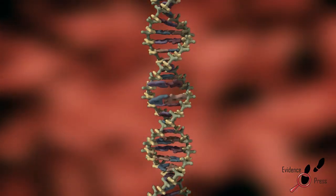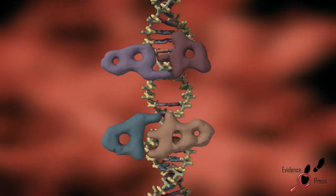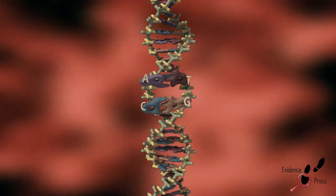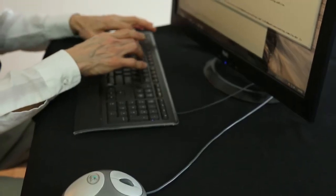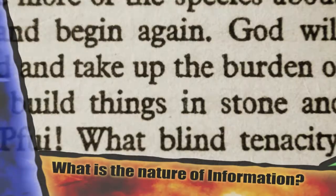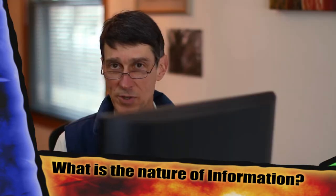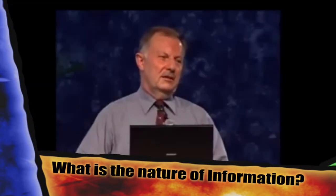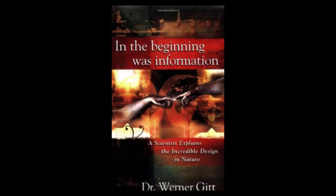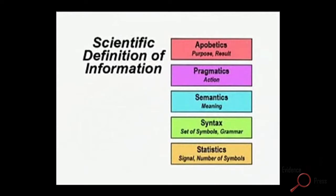Many skeptics simply deny that DNA is information, but the DNA code is more than a colloquial expression. DNA is an information code, and it is revealed in five levels. Information theorist Dr. Werner Gitt, in his book titled In the Beginning Was Information, says that information, wherever it is found, is in five levels.